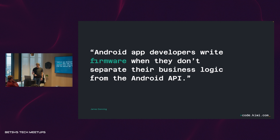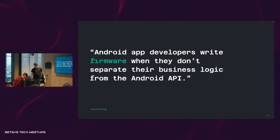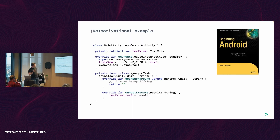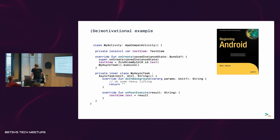Now, what about Android? James Grenning wrote in the Clean Architecture book that if we write code strongly tied to the Android SDK or Android APIs, we're basically writing firmware — it cannot live anywhere else than Android devices. In 2011, I picked up a book by Mark L. Murphy, second printing, containing the cool hotness from 2009 with APIs for Android 1.5. After learning the basics like buttons and TextViews, I went to the fun stuff: downloading something from the internet and displaying it in the app.